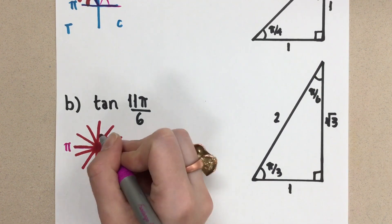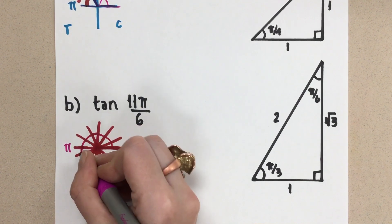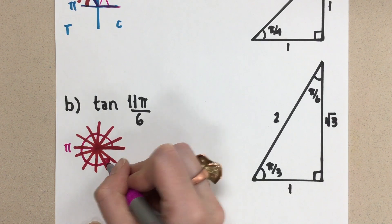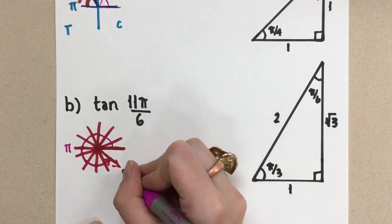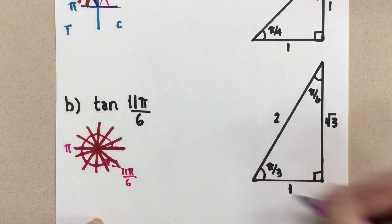5, 6, 7, 8, 9, 10, 11 sixths. So right there is 11 sixths of a π. So there's 11π over 6.